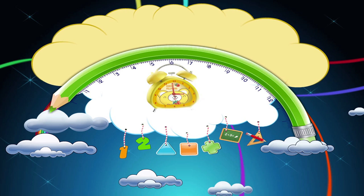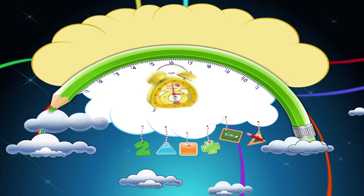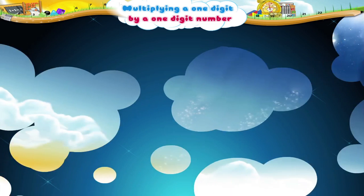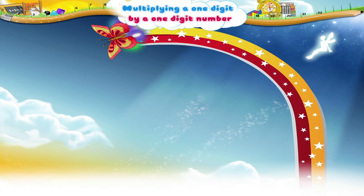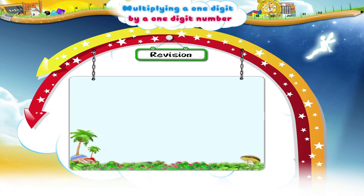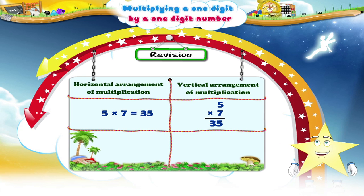Multiplying a one-digit number by a one-digit number. Starry, I hope you remember the two different ways in which you can arrange digits when you have to multiply them.